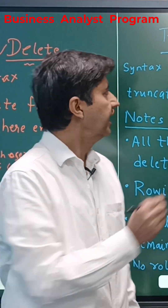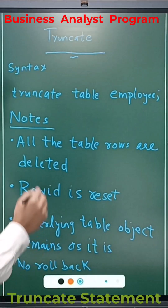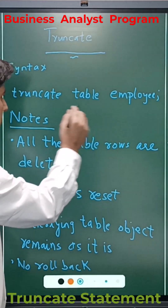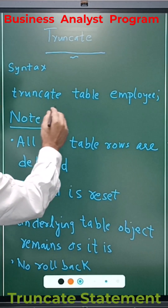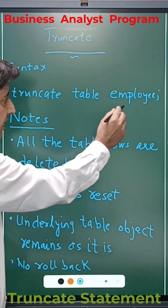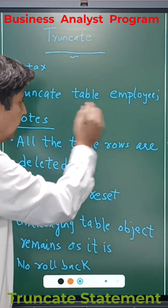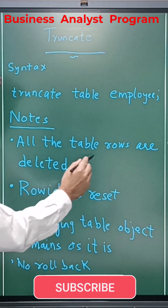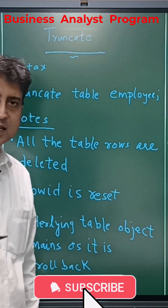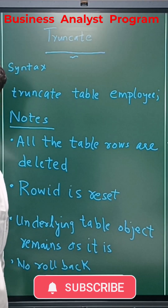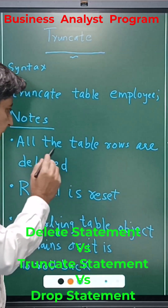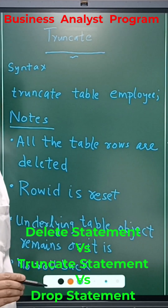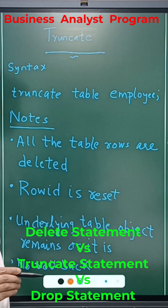Now we move on to the truncate statement. The syntax is: TRUNCATE TABLE table_name — for example, TRUNCATE TABLE employee. All the table rows are deleted when this statement is run. The WHERE clause is not applicable in the truncate table statement.